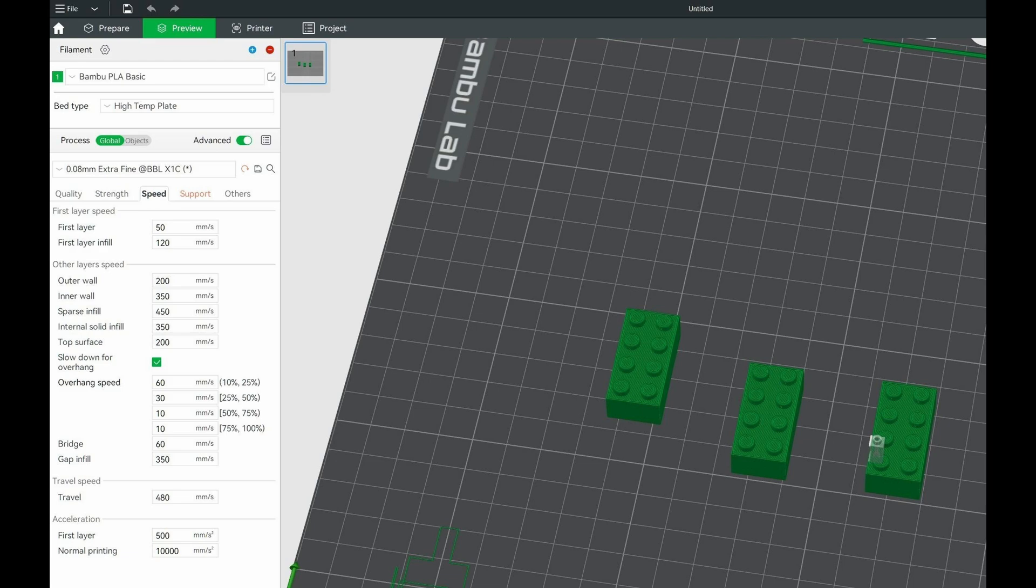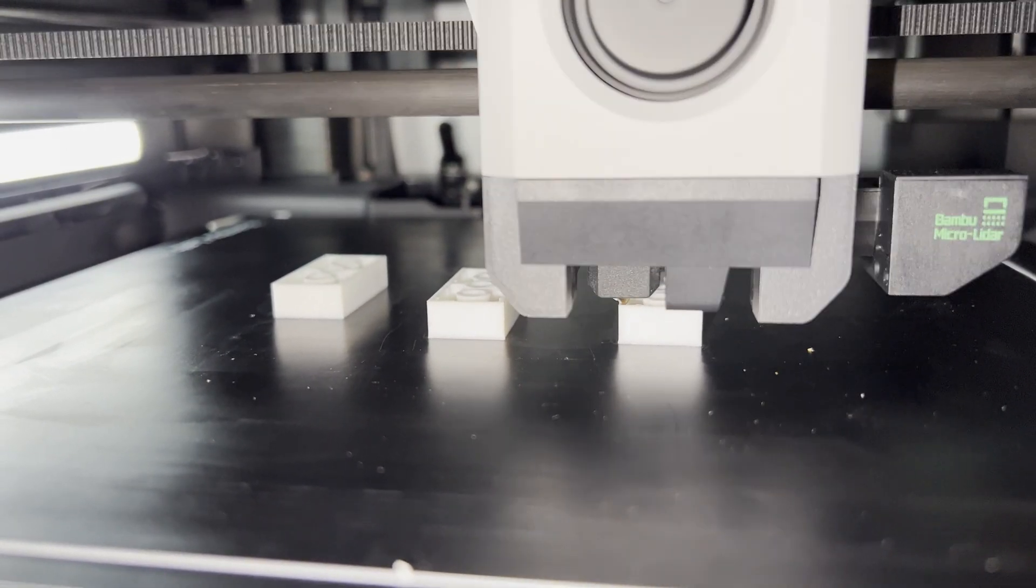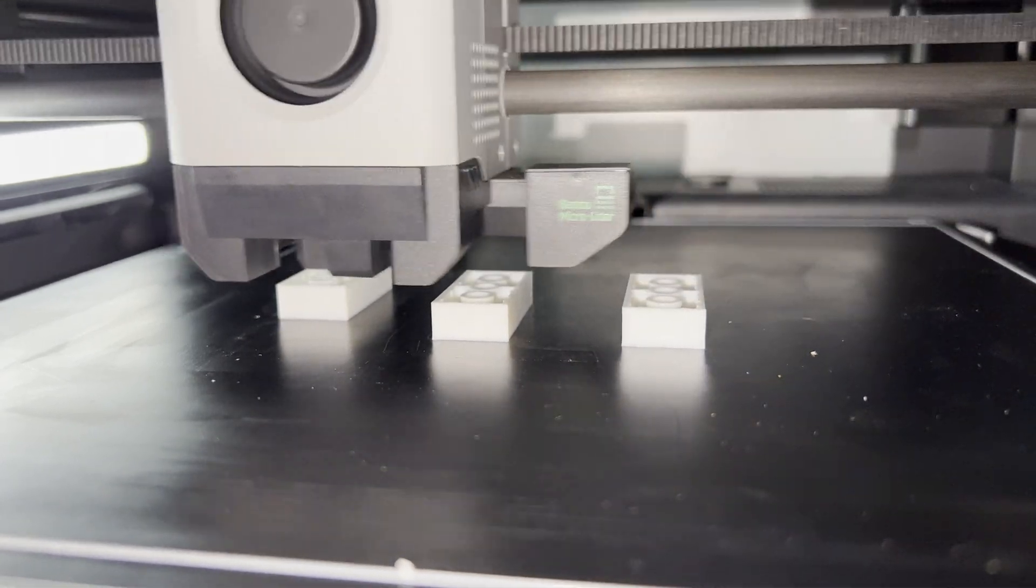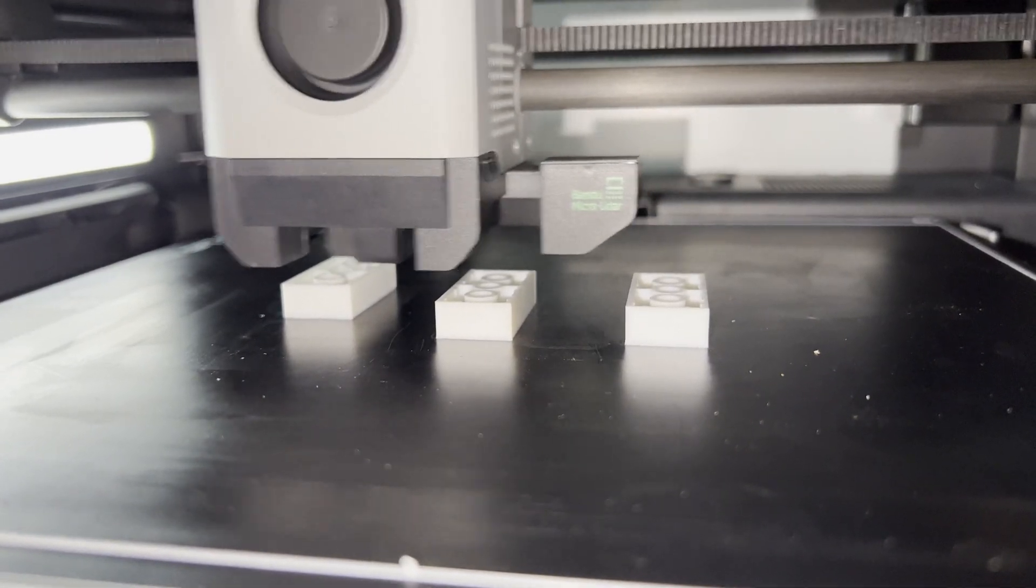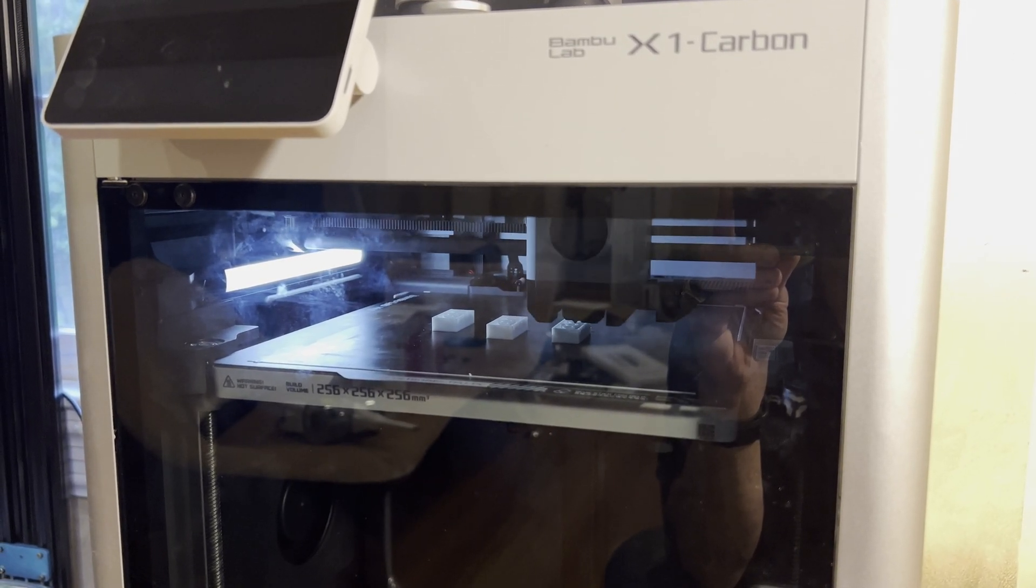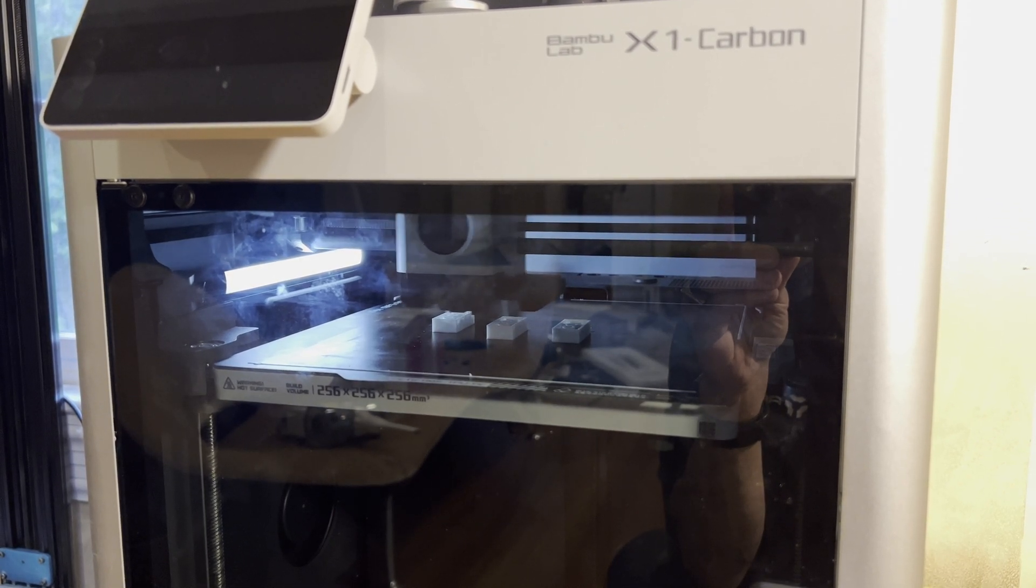I only print mechanical parts usually. I model them myself - in fact, this Lego brick that I'm printing now I modeled myself using Fusion 360, and for that reason I've always printed slowly.